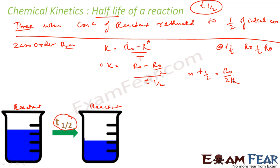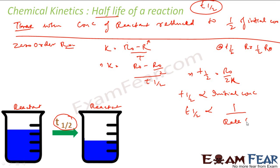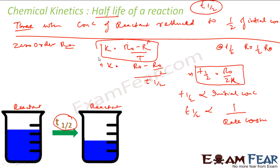So for zero-order reaction, T½ is directly proportional to initial concentration R₀ and inversely proportional to rate constant K. Please remember this formula — it's useful for solving questions faster.